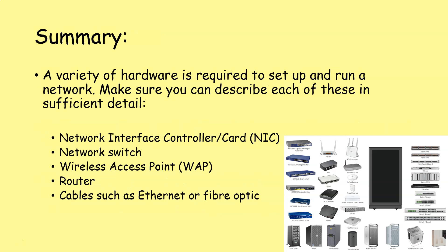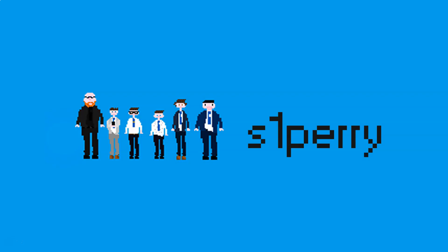In summary, there is a variety of hardware required to set up and run a network. You need to make sure you can describe each of these in a reasonable amount of detail: your network interface controller or card, your NIC, your network switch, your wireless access point, your router, and the use of cables such as ethernet or fiber optic, as well as radio waves for wi-fi and Bluetooth. Hopefully you found this informative — if you have any questions or comments please let me know down below, and good luck with your studies.